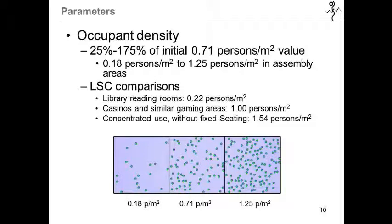When occupant density was varied, other characteristics were held constant, while the density was varied from 25 to 175 percent of the base case value. And here you see the least dense situation, the design base case scenario, and the most dense situation, which we tried to compare to Life Safety Code values, similar to a library reading room up through a casino or a more concentrated assembly use.